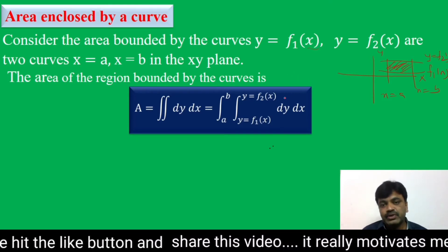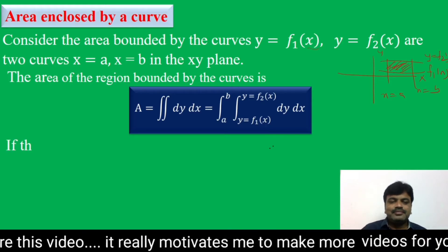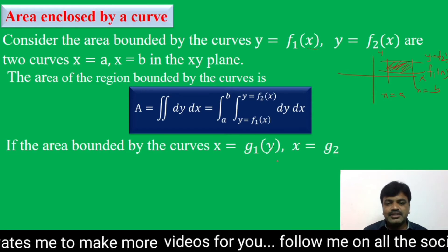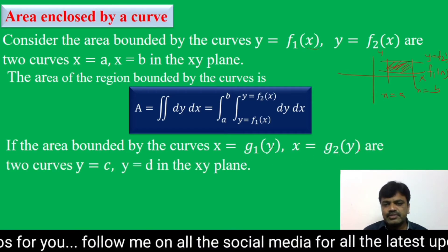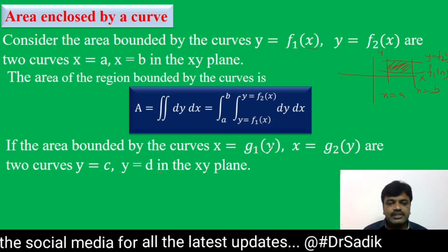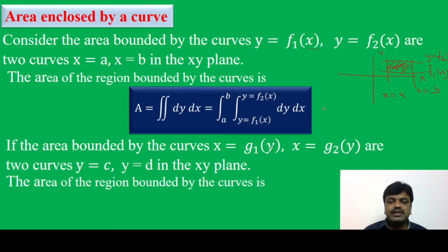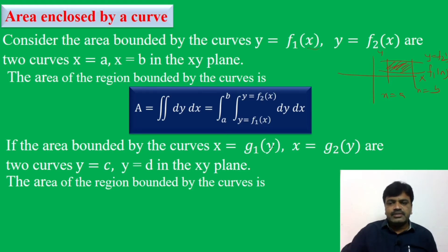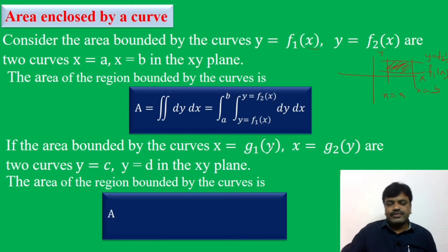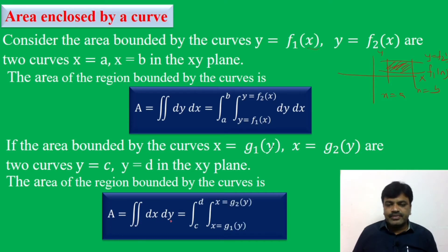The curves may also be expressed in terms of y. If the area is bounded by curves x equals g1(y) and x equals g2(y), with limits y equals c and y equals d, then the area formula becomes A equals the double integral dx dy, that is: integral from c to d, integral from x equals g1(y) to x equals g2(y), dx dy. Whenever limits are in terms of y, write dx dy.